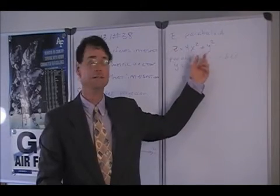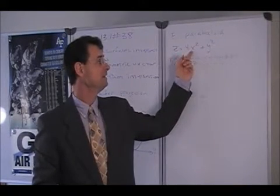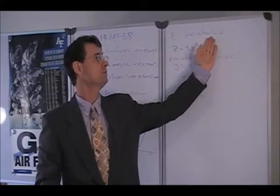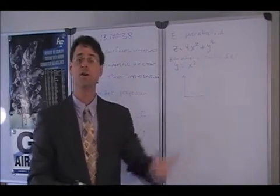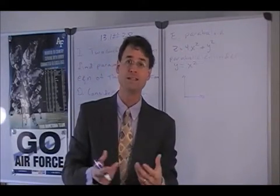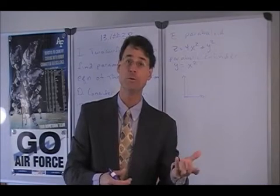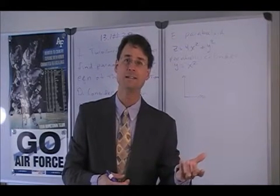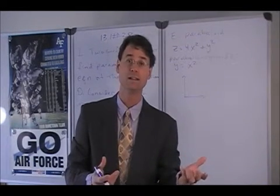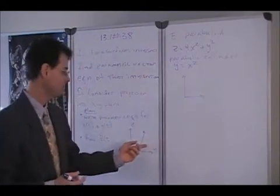Now, in the xz plane, it's y equals zero. So z equals 4x squared. So that's a parabola as well. But since that parabola has the coefficient four out in front, it's rising more quickly than the parabola we've already drawn.